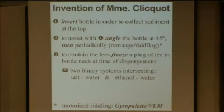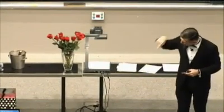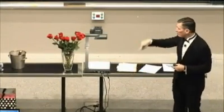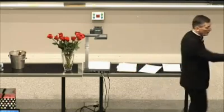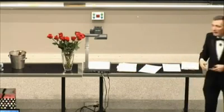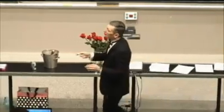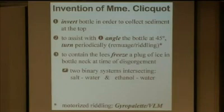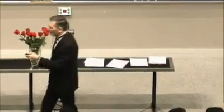By the way, the English word for remuage is 'riddling.' They have people who work wooden racks with slots at 45-degree angles, all these bottles pointed downward at 45 degrees; the workers come in every day and give each bottle a quarter turn. The French are very traditional — few champagne wineries have motorized this — but there is something called the giropalette, a gyrating palette. The California champagne wineries call it VLM: very large machine. I kid you not — in California the giropalette is called VLM.